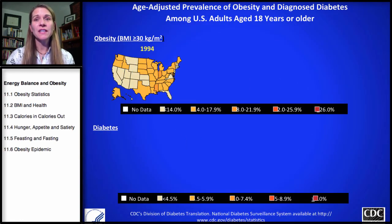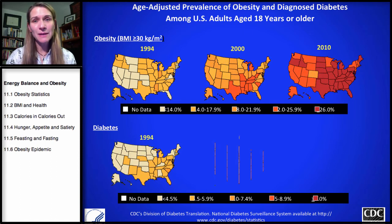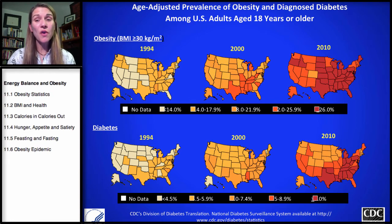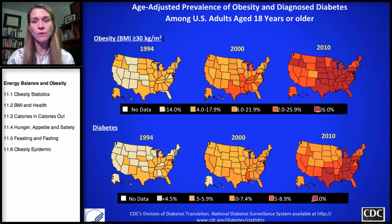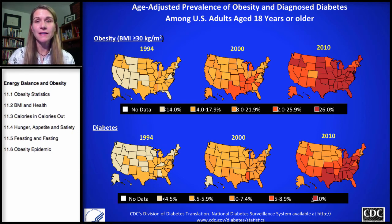This CDC data looks at obesity rates in comparison to diabetes. You can see the increasing prevalence of diabetes and how it correlates with the increase in obesity. Some of the same southern states have a greater prevalence of both obesity and diabetes, while states with lower obesity rates also have lower diabetes rates. There's a direct correlation between obesity and diabetes.